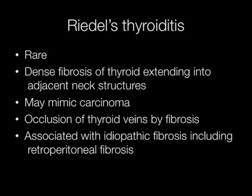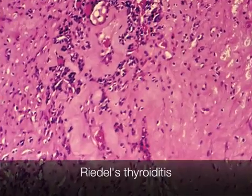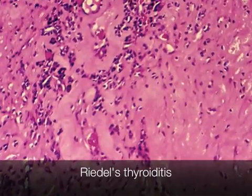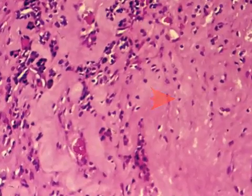Riedel's thyroiditis is rare. There is dense fibrosis of the thyroid extending into adjacent neck structures. It may mimic carcinoma, and there may be occlusion of thyroid veins by fibrosis. It is associated with idiopathic fibrosis including retroperitoneal fibrosis. This is the typical histological appearance of a thyroid affected by Riedel's thyroiditis, showing the characteristic dense fibrosis.